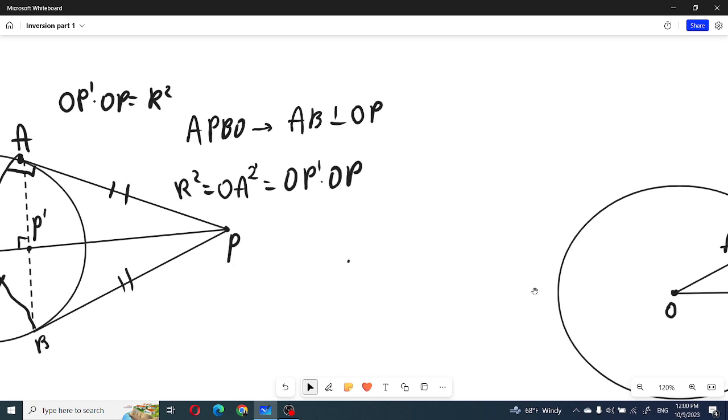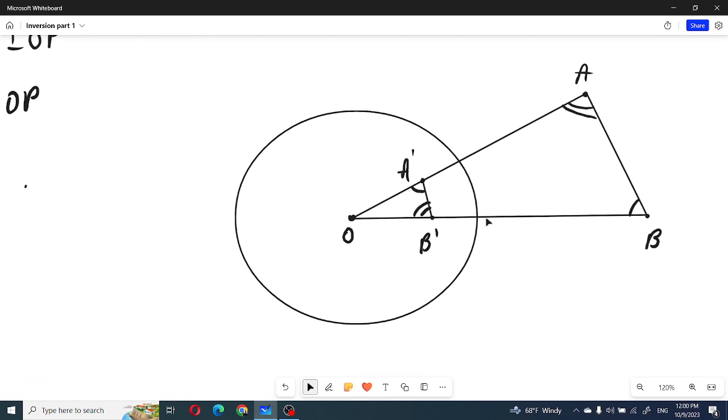Now let's discuss the case when we are given segment A prime and B prime. If we are given points inside the cycle, they will be mapped to points outside the cycle because their distance from the O must be less than R.